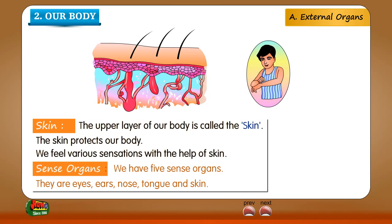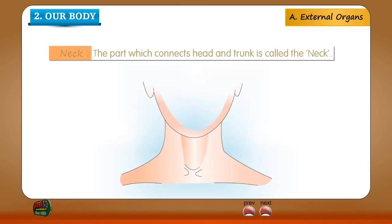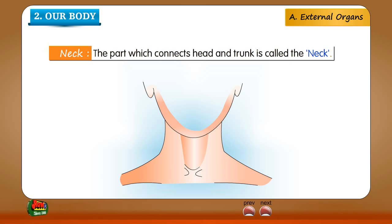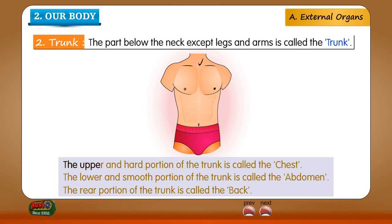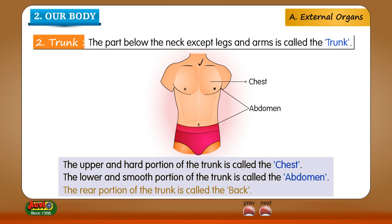We have five sense organs: Eyes, Ears, Nose, Tongue, and Skin. Neck: the part which connects head and trunk is called the neck. The part below the neck except legs and arms is called the trunk. The upper and hard portion of the trunk is called the chest. The lower and smooth portion of the trunk is called the abdomen. The rear portion of the trunk is called the back.